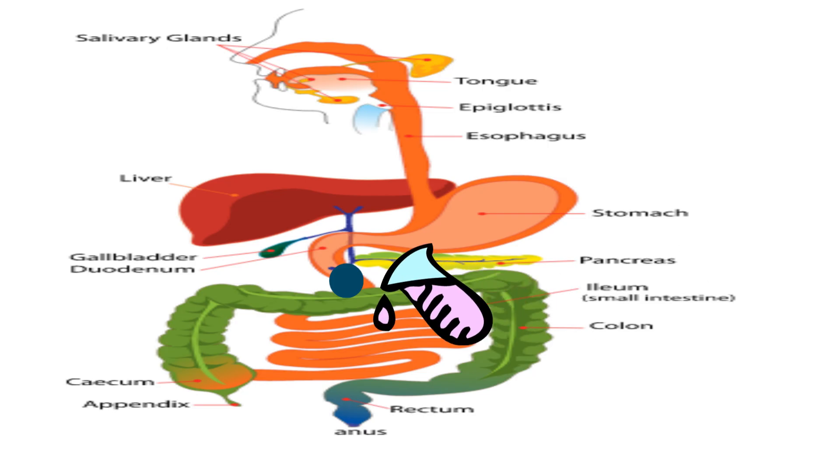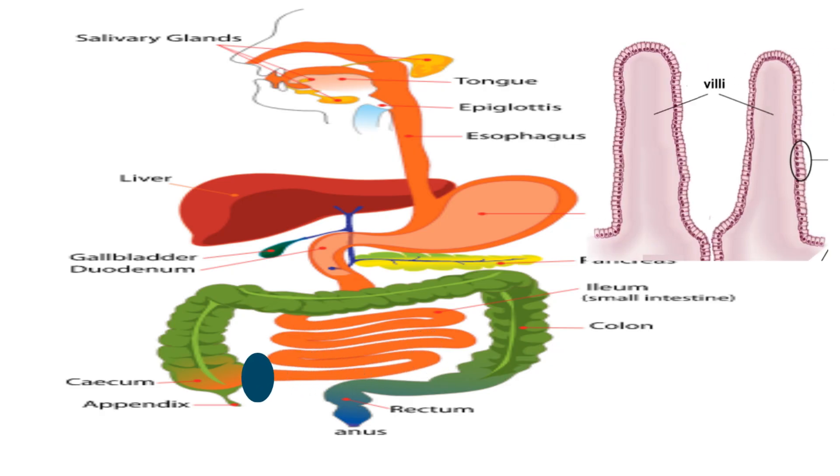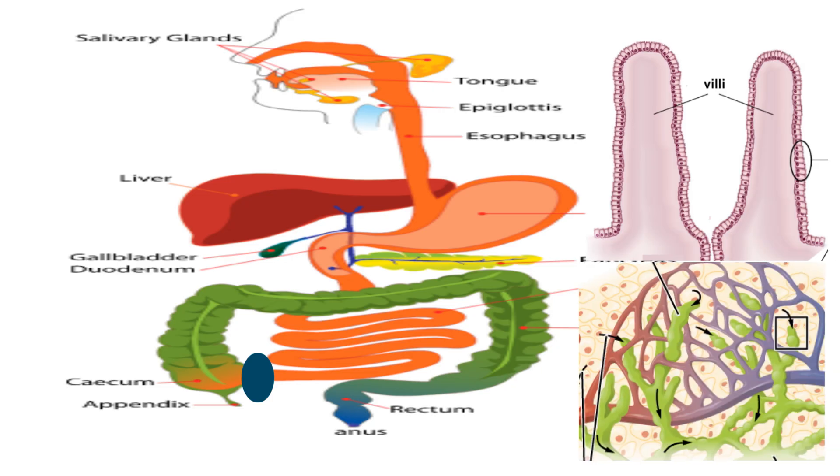Enzymes produced at the pancreas help to digest and break down the liquid chyme even further. The walls of the small intestine are lined with folds of tiny finger-like projections called villi. Nutrients diffuse through the thin walls of the villi and enter into either capillaries or lymphatic vessels.